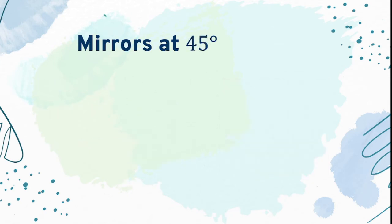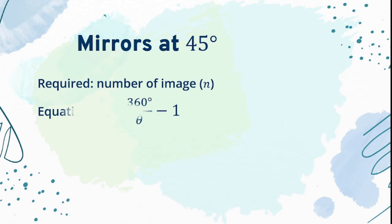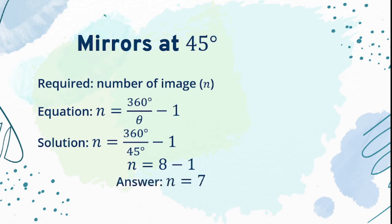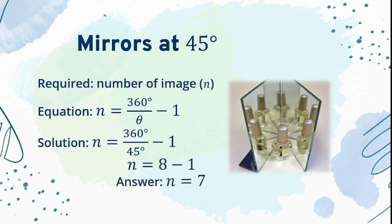If the mirrors are at 45 degrees, looking for the number of images, we will use the equation. Again, N equals 360 degrees divided by angle theta minus 1, and we will substitute the value of angle theta which is 45 degrees. Getting its quotient, it will result in N equals 8 minus 1. Therefore, the number of images formed at angle 45 is 7.